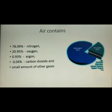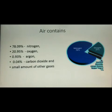Plants use carbon dioxide for the process of photosynthesis and release oxygen into the atmosphere. Since humans have been cutting down trees, the amount of carbon dioxide in the atmosphere is increasing, which is responsible for the rise in atmospheric temperature. In this lesson, we are going to study the greenhouse effect, global warming, and acid rain.